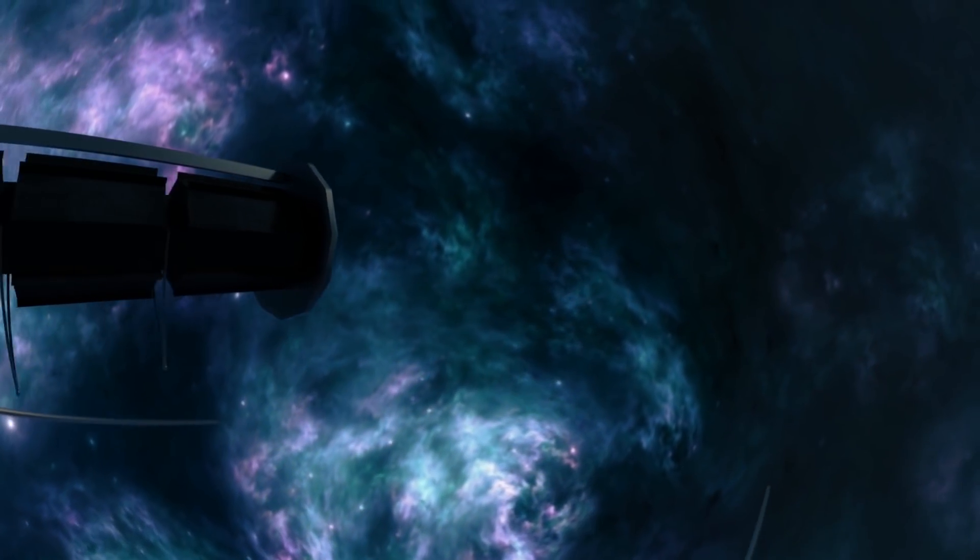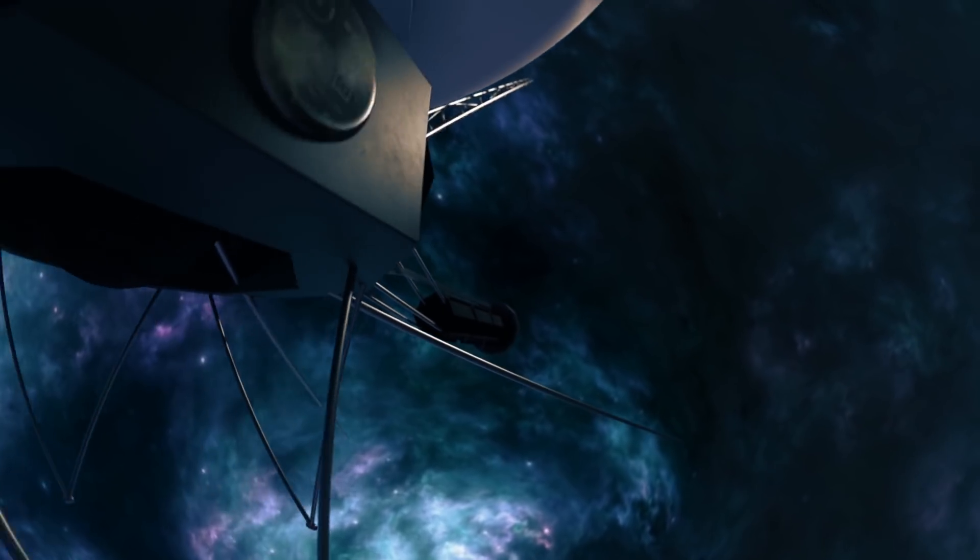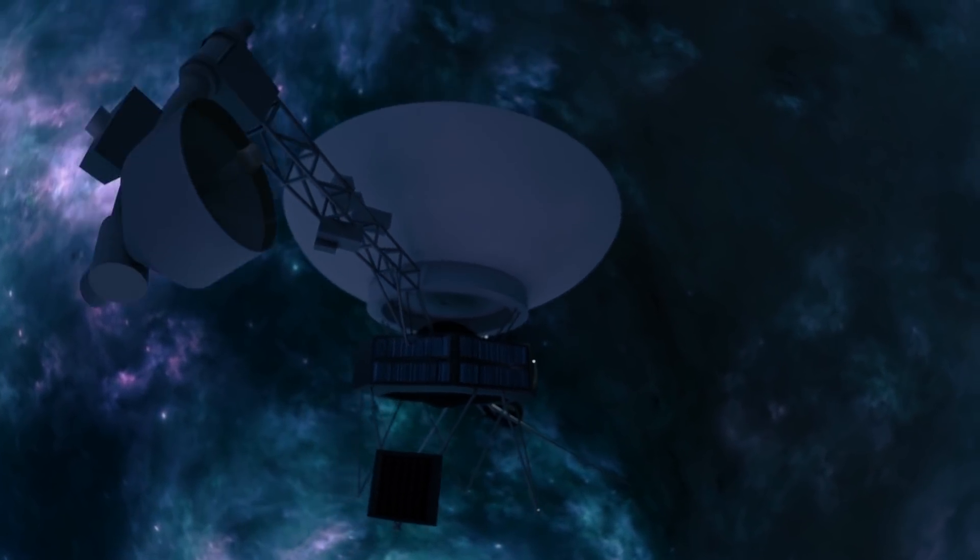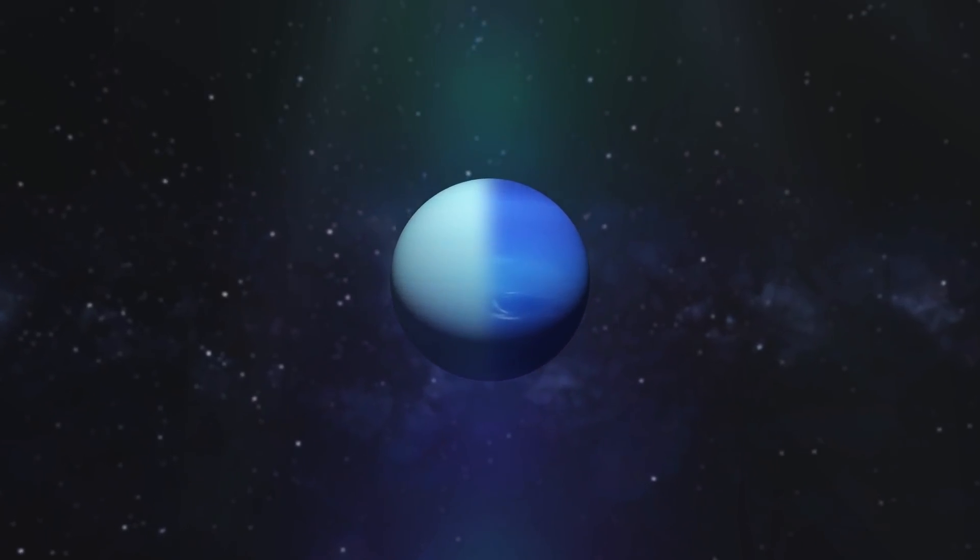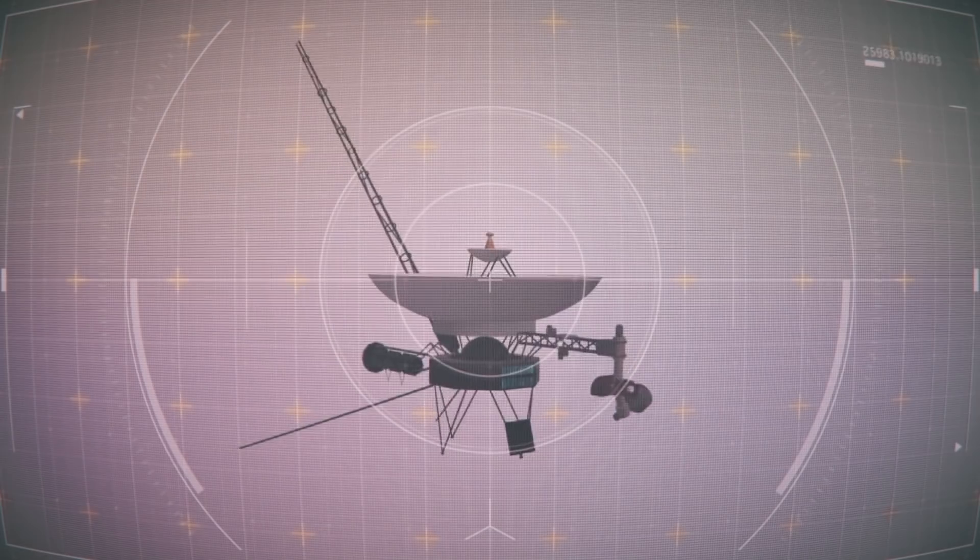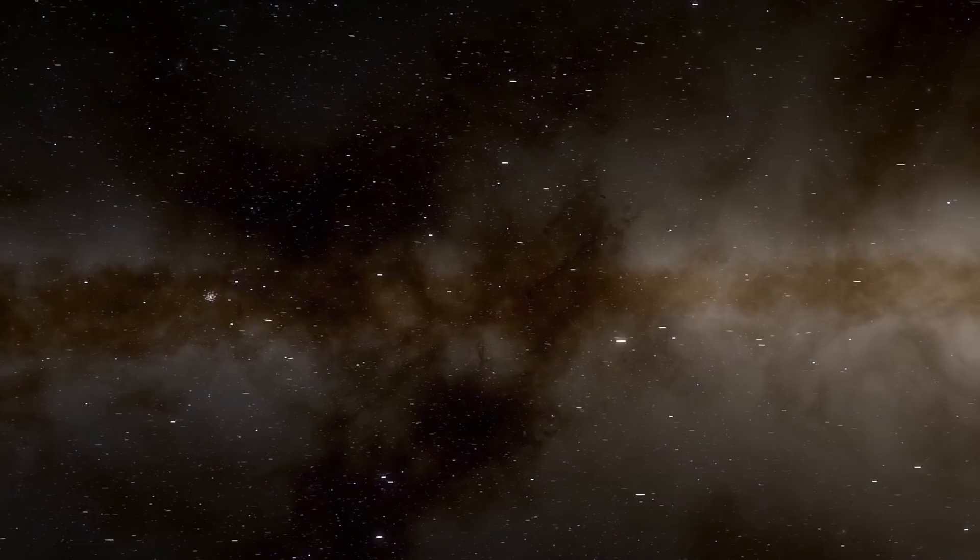For 44 years now, Voyagers have been moving farther and farther from the Earth while exploring the solar system and interstellar space. All data we currently have about Uranus and Neptune was found by Voyager 2, while Voyager 1 collected the first data ever about interstellar space.